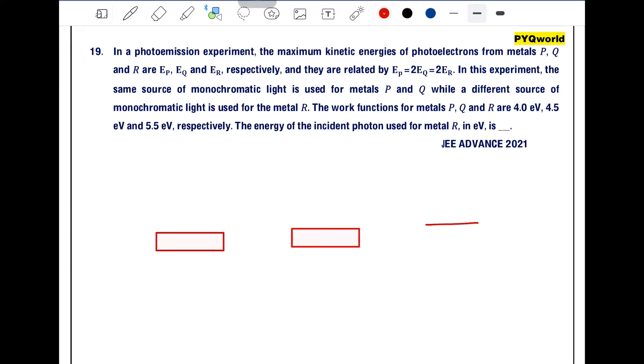How many metals? There are three. One, let's say this is two, let's say this is three. This is P, this is Q, this is R. The maximum kinetic energies of the emitted electron are EP, here we have EQ, and here we have ER.